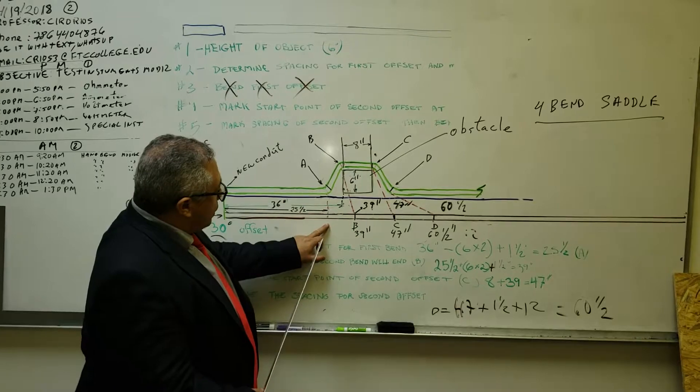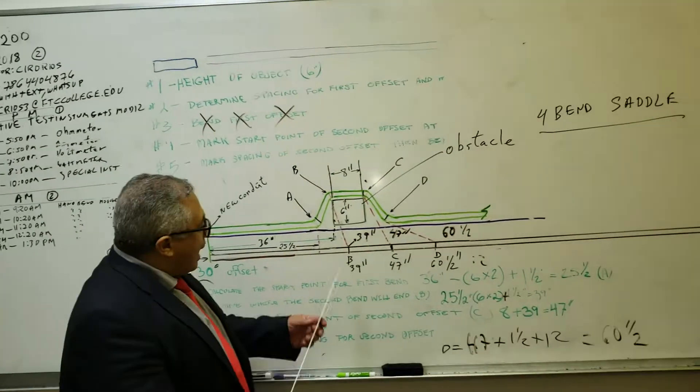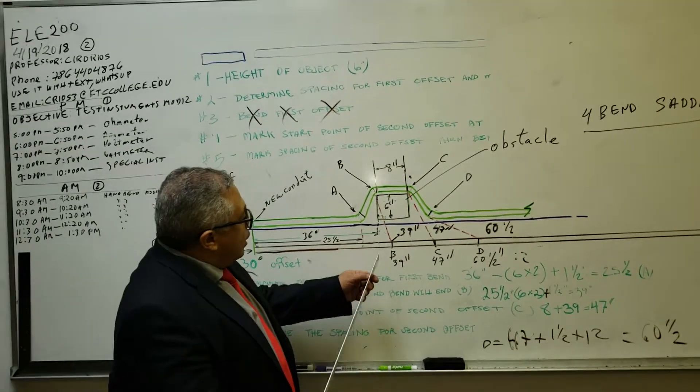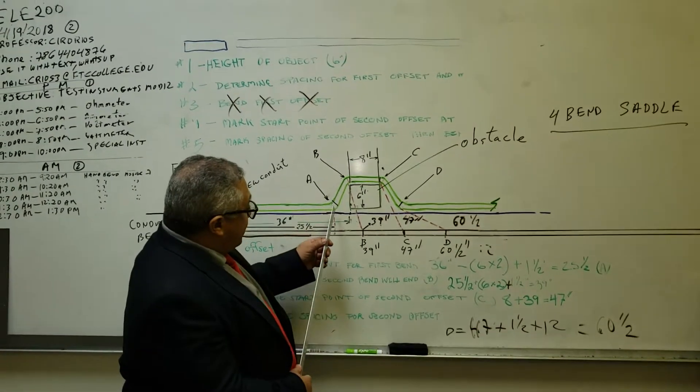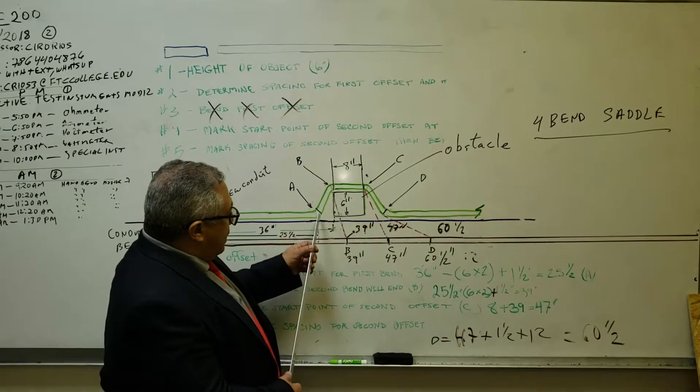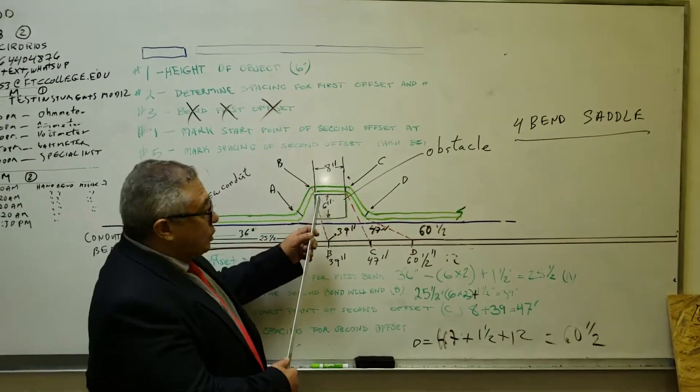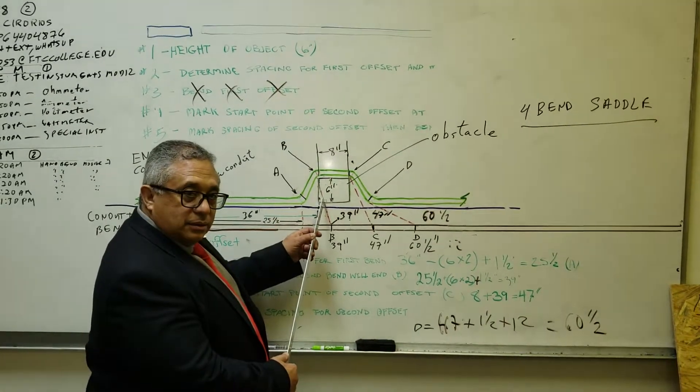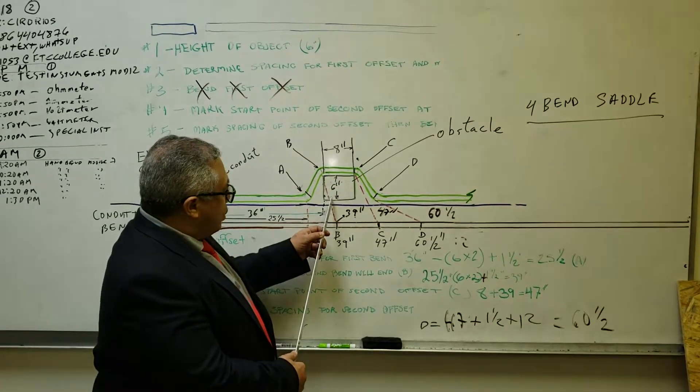Now that we have this one, we go for the next mark, which is B. How do we find mark B? You find mark B by adding to this 25 and a half, this distance, which is according to the table, the multiplier, which is 2, times the height, which is 6, that is 12.